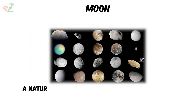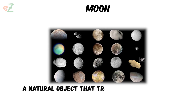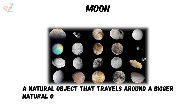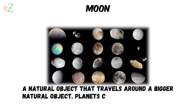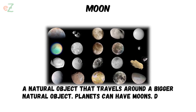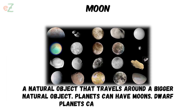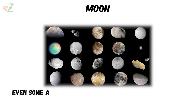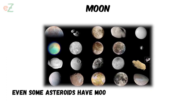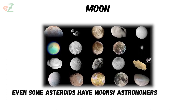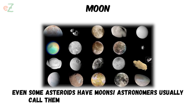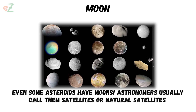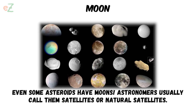Moon. A natural object that travels around a bigger natural object. Planets can have moons. Dwarf planets can have moons. Even some asteroids have moons. Astronomers usually call them satellites or natural satellites.